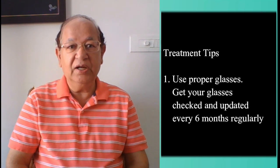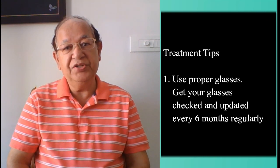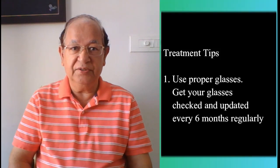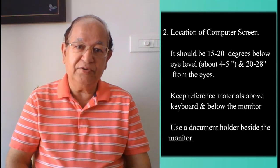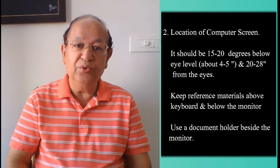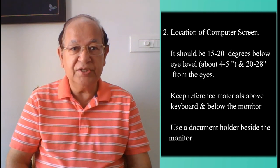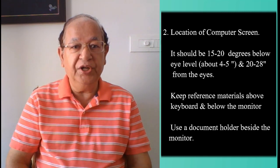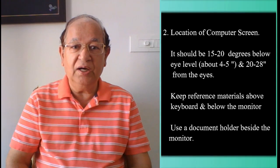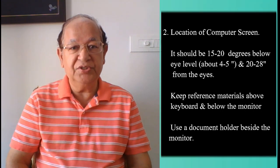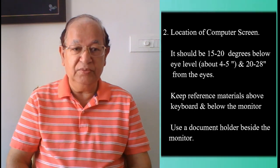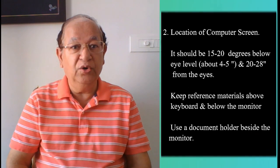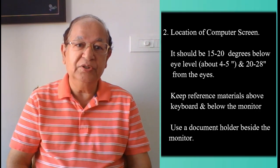Get your glasses checked and updated every six months regularly. An important point to consider is the location of the computer screen. Most people find it more comfortable to view a computer when the eyes are looking downwards. Optimally, the computer screen should be 15 to 20 degrees below eye level — about 4 or 5 inches as measured from the center of the screen — and 20 to 28 inches from the eyes. Reference materials should be located above the keyboard and below the monitor.